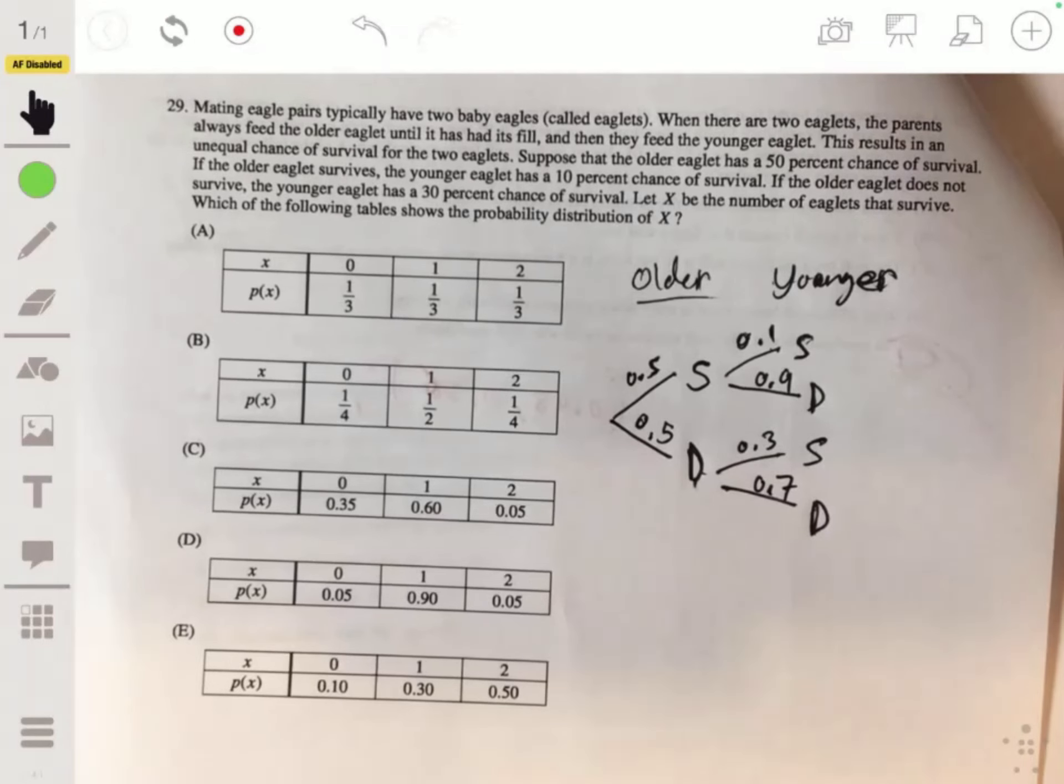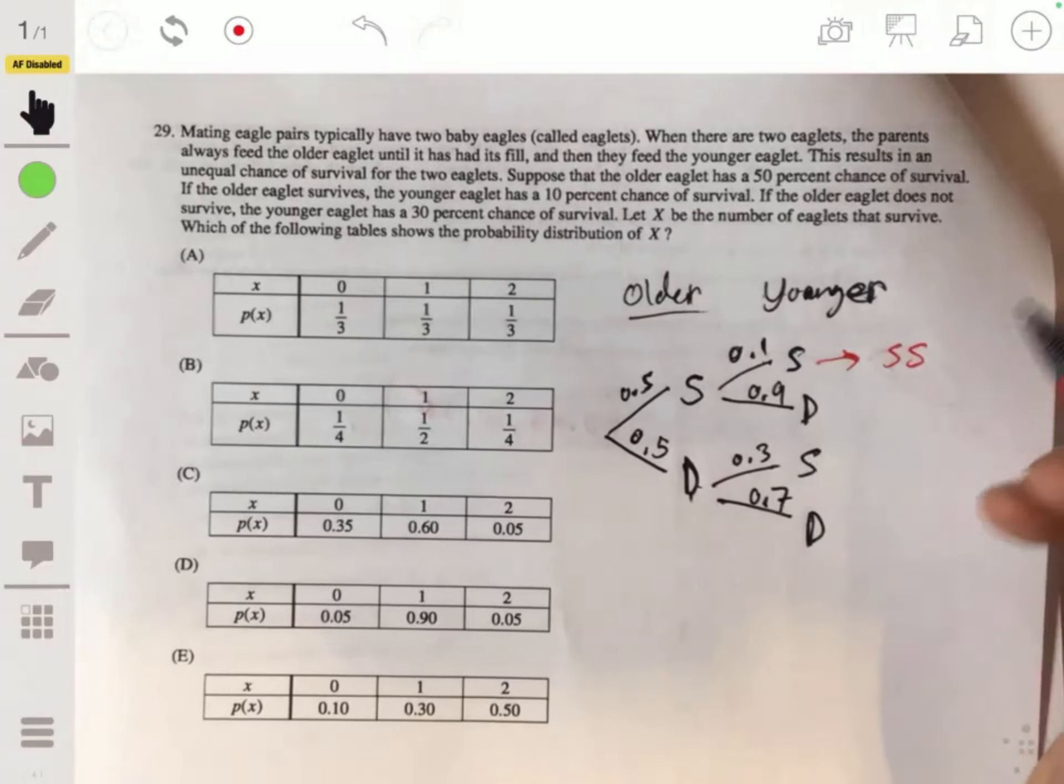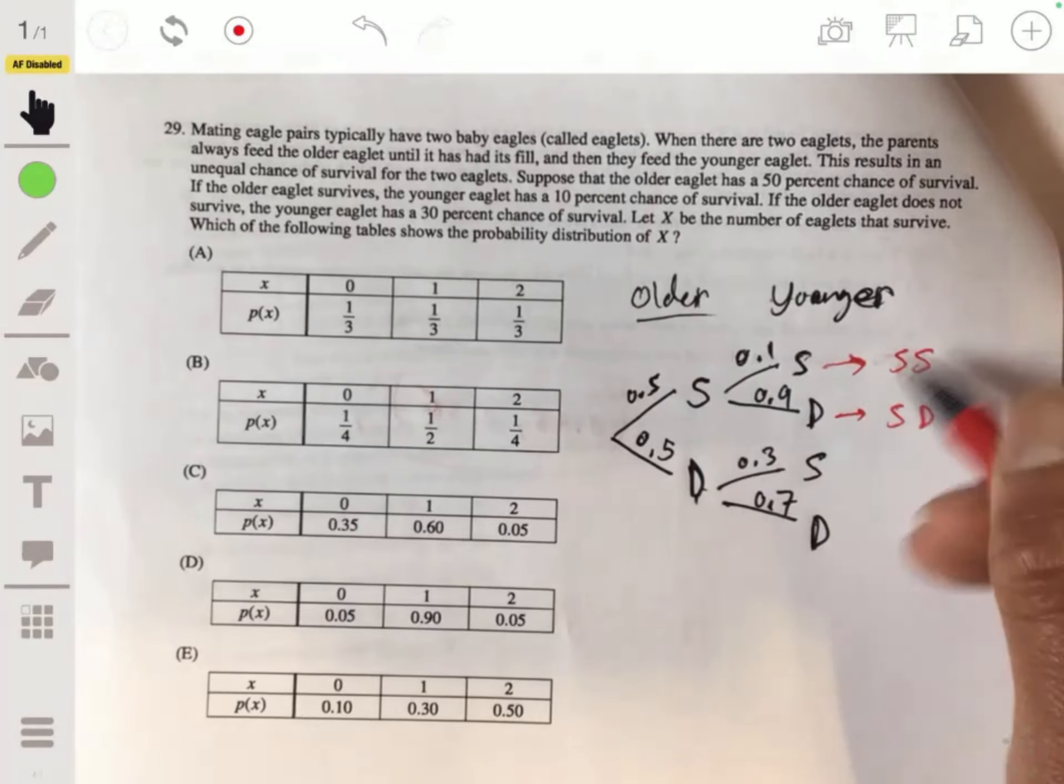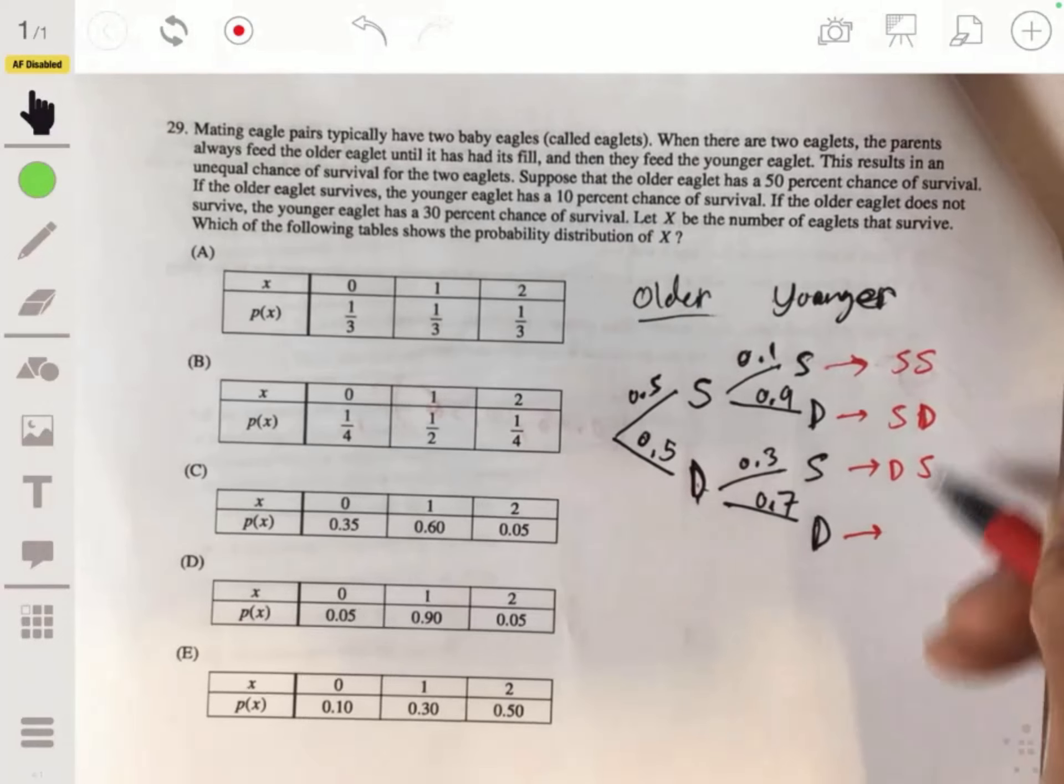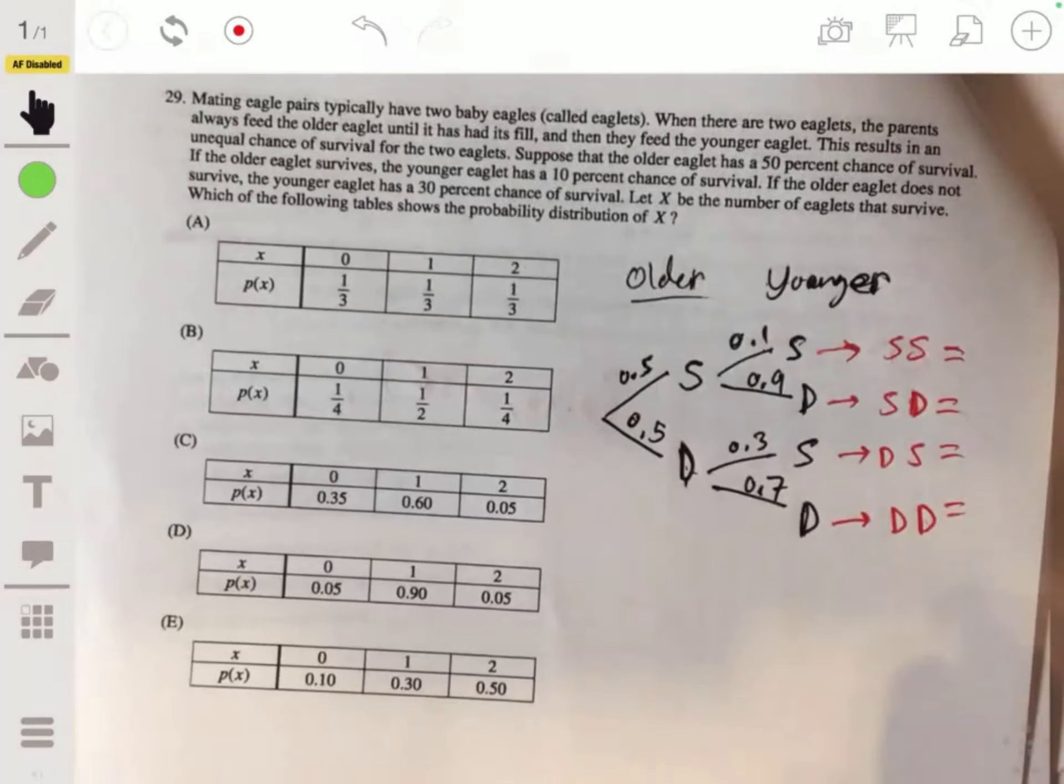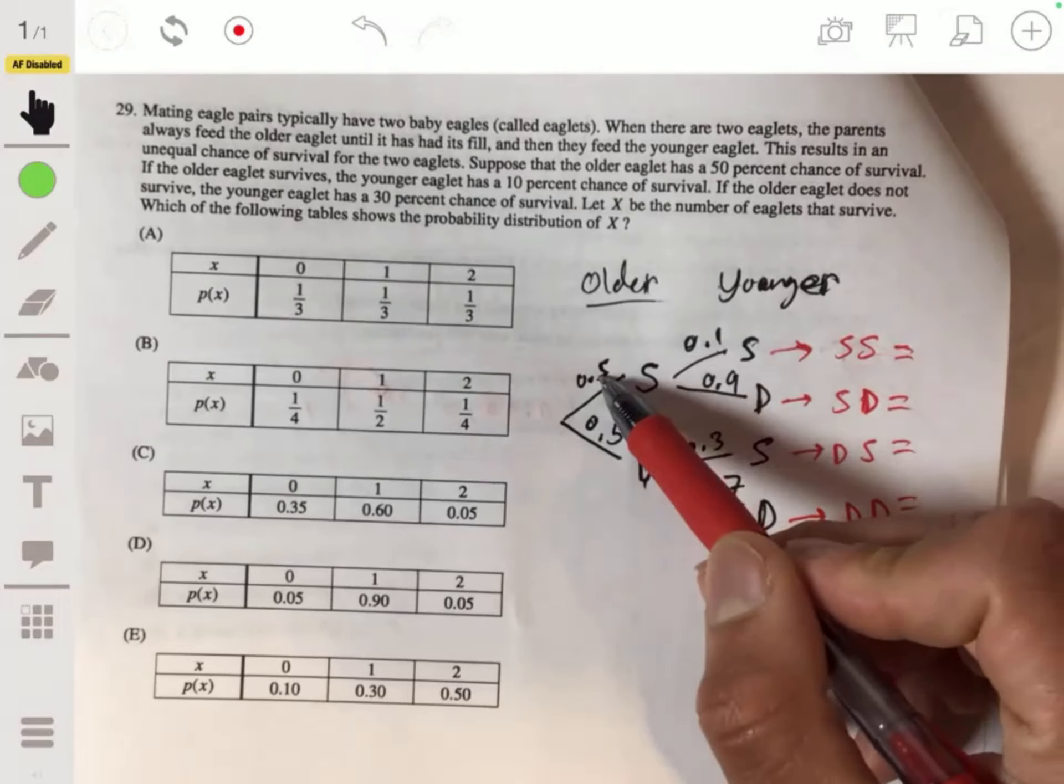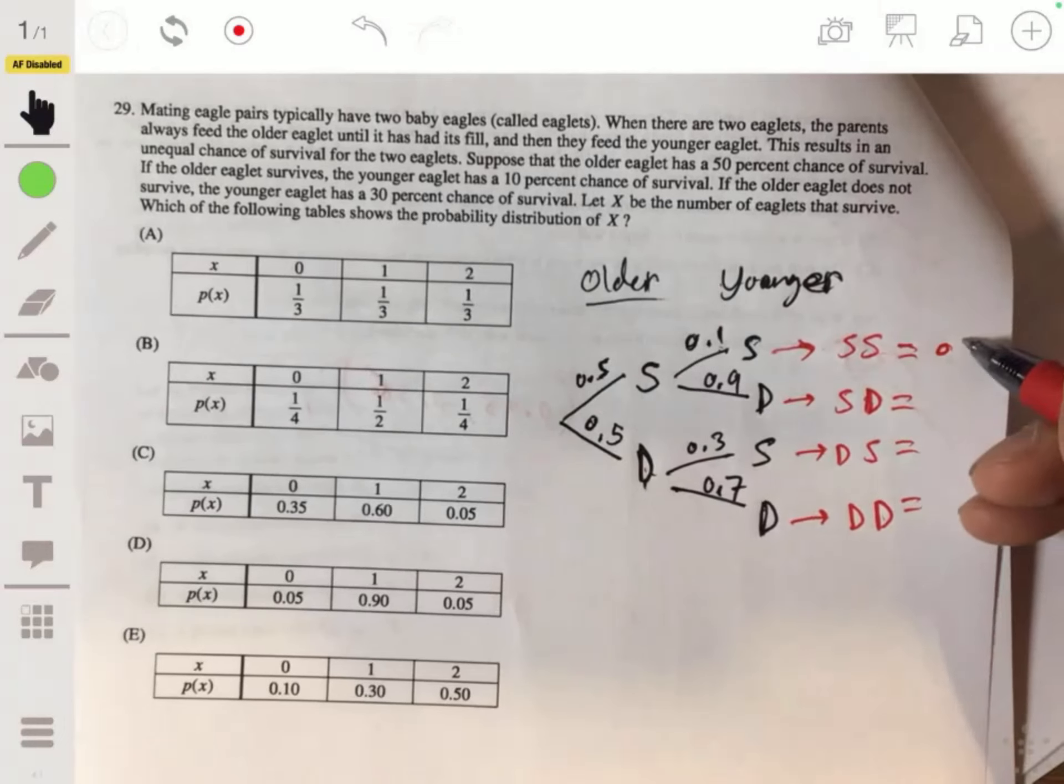So then now we have these possibilities. We've got that they both survive SS, we have SD where the first one survives and the older one survives but the younger one dies, the older one dies and the younger one survives, or they both die. So how do you find those probabilities? Remember, you multiply them across. 0.5 times 0.1, 0.05 right? 0.5 times 0.9, 0.45.